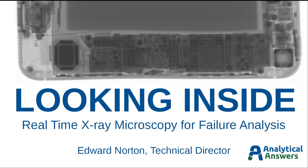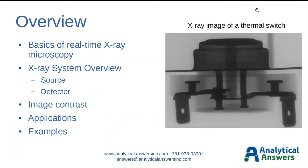So let's begin. I'm going to go through an overview here. We're going to cover the basics of real-time X-ray microscopy and highlight some of its features. I'll talk about the system you use to do this type of analysis. I'll talk about the particulars about individual samples that cause you to see contrast in an X-ray image. I'll give some examples of applications and then go through some nice examples of types of problems that you can solve doing failure analysis with real-time X-ray microscopy.